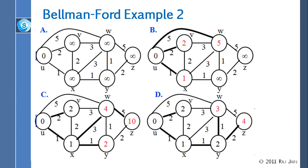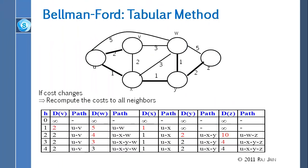To do this in tabular form, write rows for zero-hop, one-hop, two-hop, three-hop, and four-hop. Each node gets two columns: cost and path. For zero hops, everything is infinity and the path is unknown. For one hop, we can reach V (cost 2, path U→V), W (cost 5, path U→W), and X (cost 1, path U→X). Everything else is unknown.